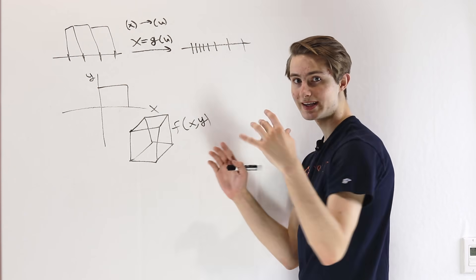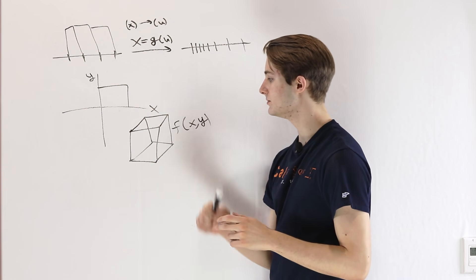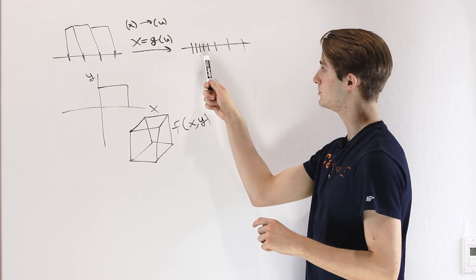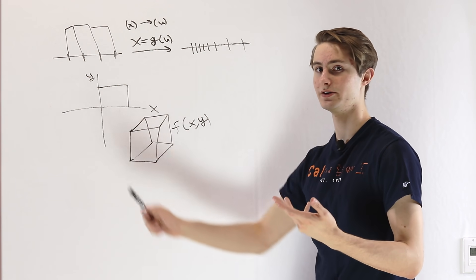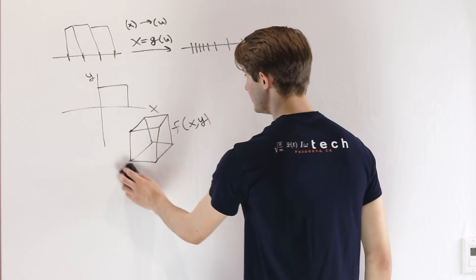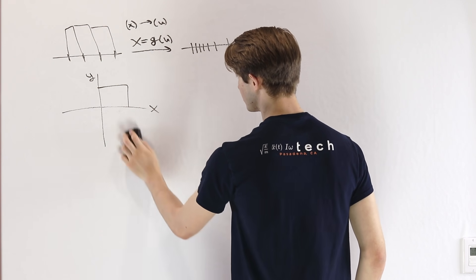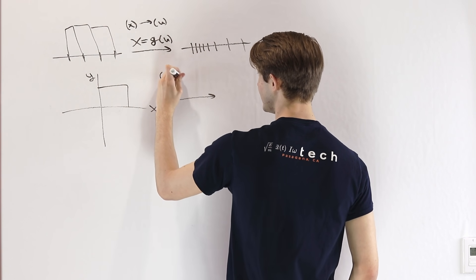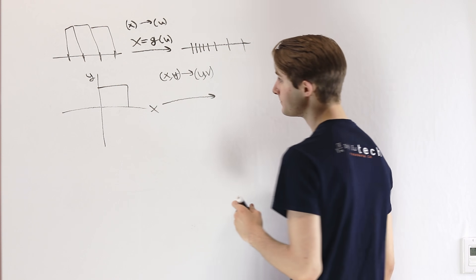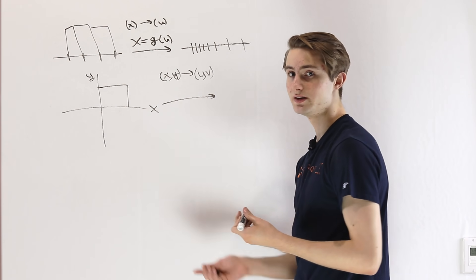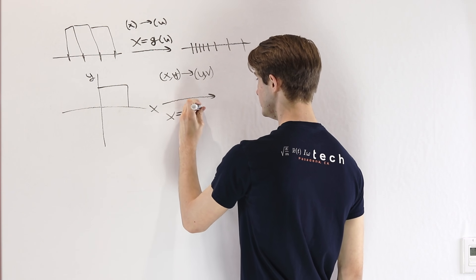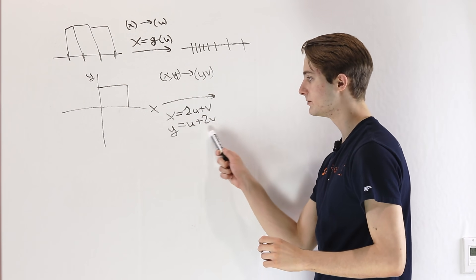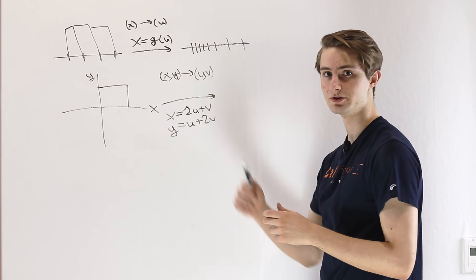So how much areas get scaled, squished, or stretched in the 2D input space determines how much the base is being contracted, and that affects the volume in the same way length contraction affected area in the single variable case. We have to think about how much areas are getting squished or stretched as we map from the space of x, y onto u, v. For example, we could define x equals 2u plus v and y equals u plus 2v, defining new variables u and v implicitly in terms of x and y.